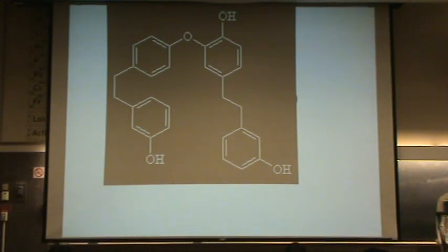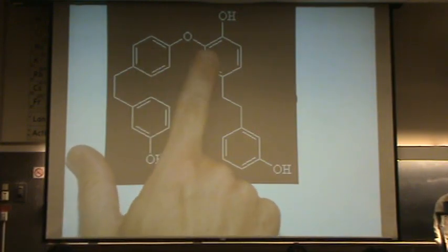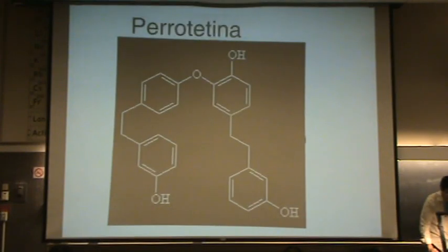And? Not a nester. Ether. When you have an oxygen and two organics on either side, that's an ether. This one is perrotetina. Does anybody know what that means? I think it means small-breasted dog.